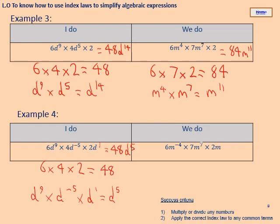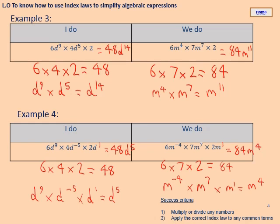For the 'We do': multiply 6 times 7 times 2 — six times seven gives 42, times two gives 84. Then: m to the power minus four times m to the power seven times m to the power one. Minus four plus seven gives three, plus one gives four. Answer: 84m to the power four. Pause the video, mark your answer, and give yourself a big tick in green pen if you got it right.